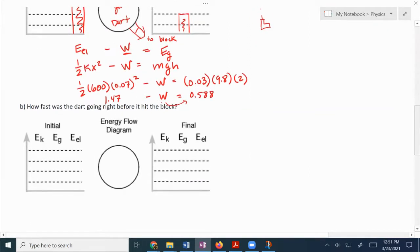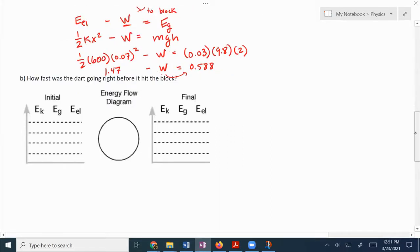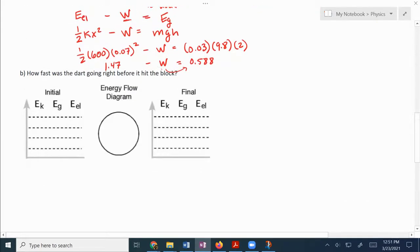Part B, how fast was the dart going before it hit the block? Now there's a couple of ways to do this one, and it doesn't necessarily require you to do an energy bar diagram. So if you didn't do an energy bar diagram for this one, that's okay. But the initial situation is not different, right? It's the same. So we still start out with that, we're still going to put the dart gun and the dart in the system. And the dart is still basically two meters up, so that's not different. The difference is that because the dart hasn't hit the block anymore, that energy is still kinetic energy. So our energy bar graph would look something like that.